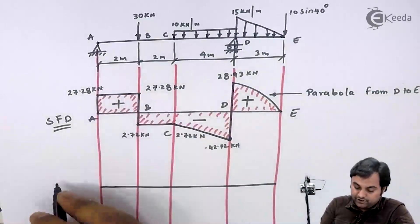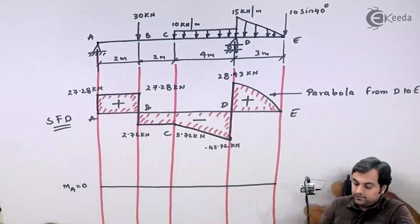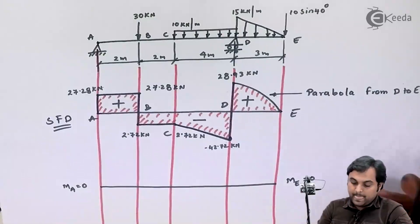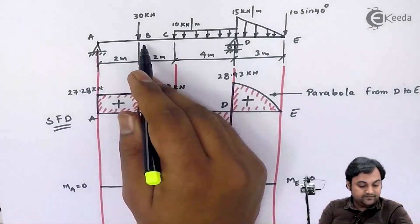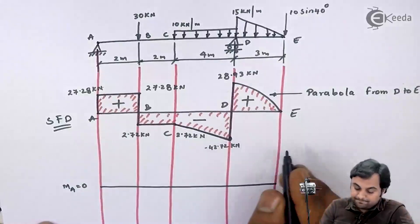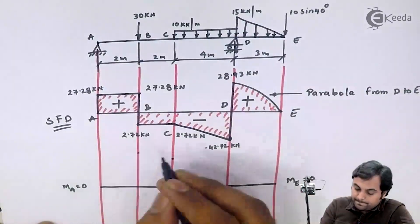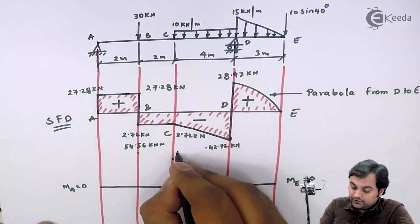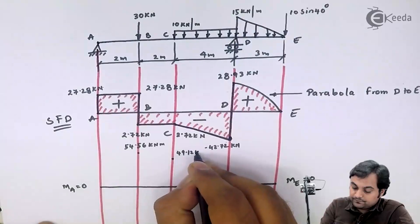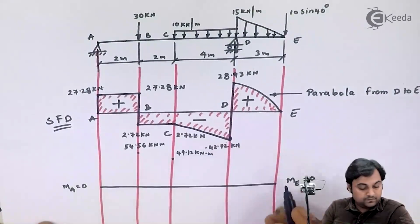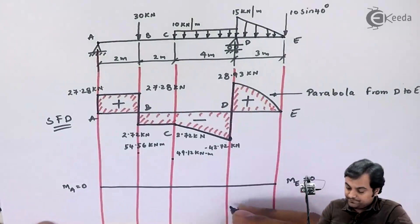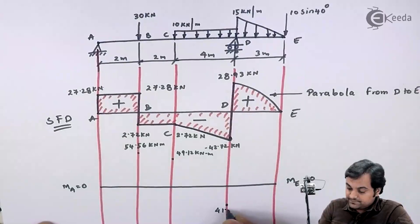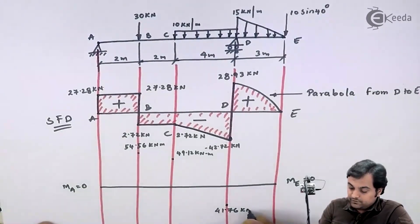Moment at A was 0 because simply supported. Moment at E is equal to 0 since it is overhanging portion. Moment at B we are getting the value as 54.56. Moment at C is 49.12 again positive. Moment at D is minus 41.76 kilonewton meter.